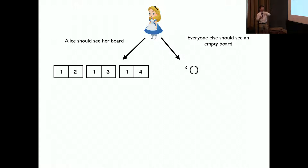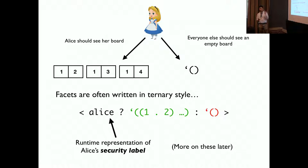Alice should see her board like this, represented by a list of x y pairs. And everyone else should see an empty board.